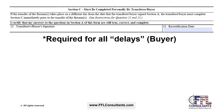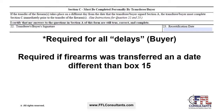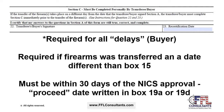Section C of Form 4473 is required for all delays. This section is completed by the transferee when they come to pick up their firearm after receiving a proceed determination from NICS. This section must be completed when the firearm is transferred on a date different from the date listed in Box 15, and must be within 30 days of the NICS approval proceed date written in Box 19A or 19D.